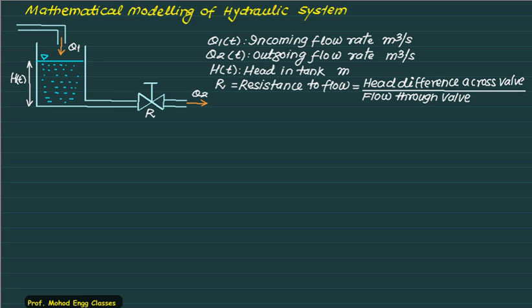R is the resistance to the flow. The resistance is defined as the head difference across a valve upon flow through the valve. A is the cross sectional area of the tank which remains constant and is also called as the capacitance of a tank.